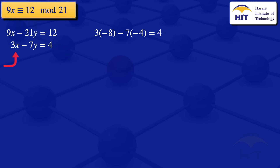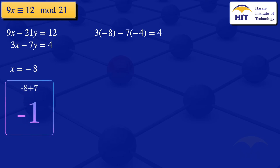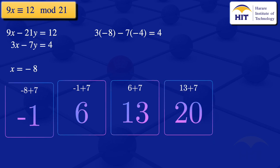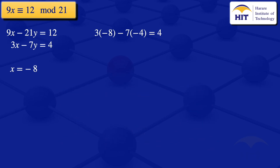Comparing with equation 1 (3x − 7y = 4), by comparison x = −8. Since we need 0 < x < 21, and −8 is negative, we add the reduced modulus 7 repeatedly: −8 + 7 = −1, −1 + 7 = 6, 6 + 7 = 13, 13 + 7 = 20. The three incongruent solutions greater than 0 and less than 21 are x = 6, 13, and 20.